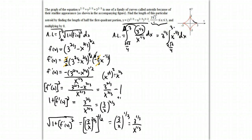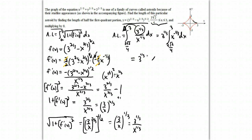So we have 3^(1/3) times the integral of x^(-1/3) dx. Integrating x^(-1/3): add one to the exponent to get x^(2/3), divided by 2/3. We evaluate 3^(1/3) times x^(2/3) — with the 3/2 factor from integration — from 3√2/4 up to 3.